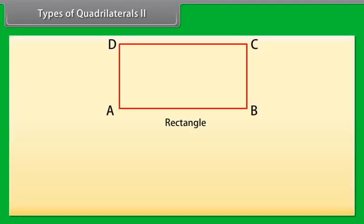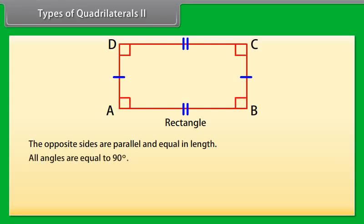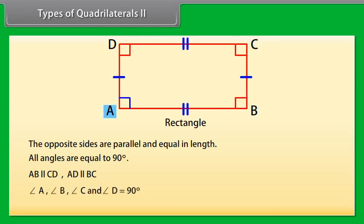Rectangle: In a rectangle, the opposite sides are parallel and equal in length, and all angles are equal to 90 degrees. Here, AB is parallel to CD and AD is parallel to BC, and angles A, B, C, and D are all 90 degrees, so ABCD is a rectangle.